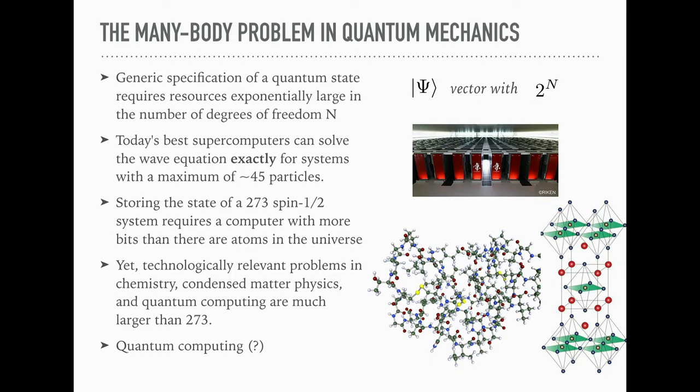One of the first postulates of quantum mechanics is that a generic specification of a quantum state requires resources that grow exponentially in the number of degrees of freedom. For instance, if you want to write down the wave function for a spin one-half system, you need, in general, 2 to the n coefficients. Today's best supercomputers can solve the Schrödinger equation exactly for only a few particles, like 45, and for that you need big computers.